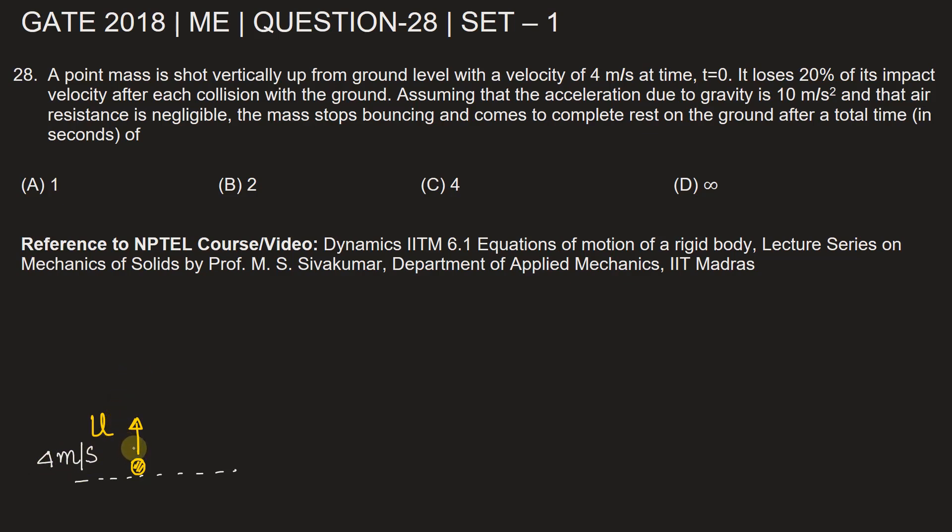So under this given situation, the ball will go up and it will reach the maximum distance where the final velocity of the ball will become zero. The velocity at this point will be zero.